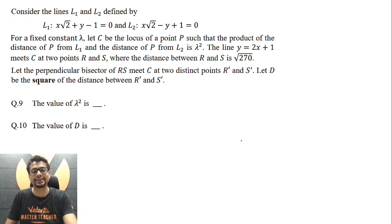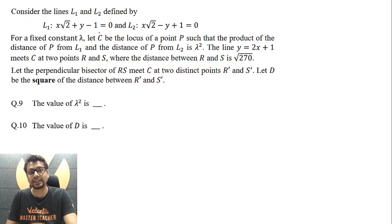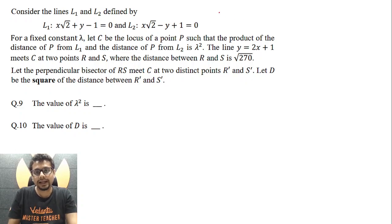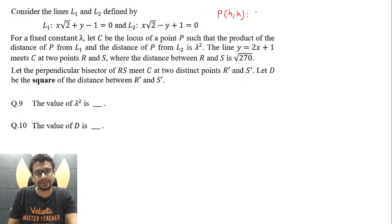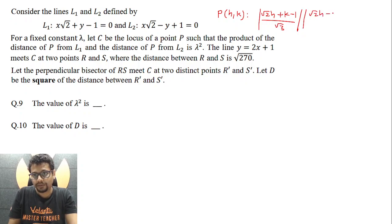You may pause the video to read the question very carefully. Here, C is the locus of a point P such that the product of the distances of this variable point P from two given lines L1 and L2 is λ². So let that variable point P be (h, k). That essentially means |√2·h + k − 1| / √3 times |√2·h − k + 1| / √3 equals λ².